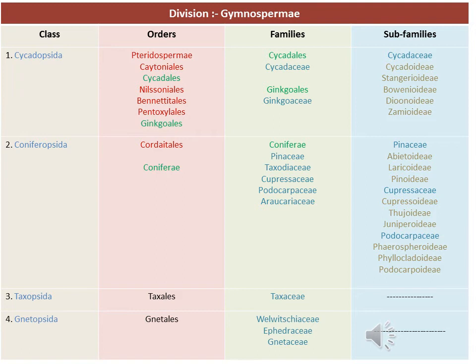Cycadaceae has sub-families Cycadoideae, Stangeroideae, Bowenioideae, Diooideae, and Zamioideae. Class Coniferopsida has orders Cordaitales and Coniferales. Coniferales has living families: Pinaceae, Taxodiaceae, Cupressaceae, Podocarpaceae, and Araucariaceae.